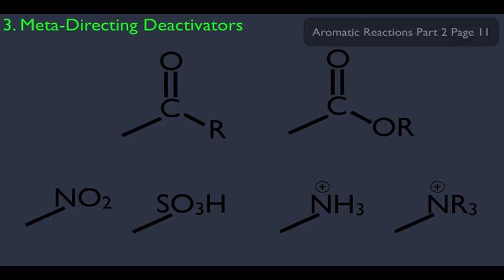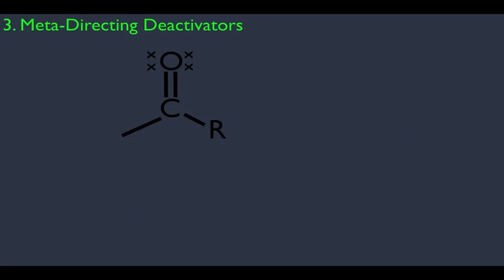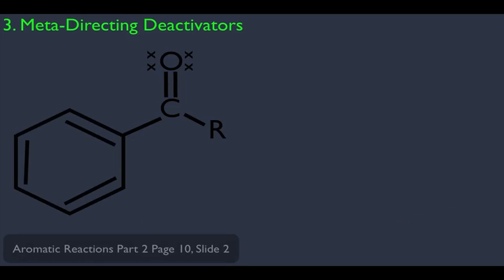Notice the first two substituents — they both have carbonyl groups. Remember, that's a C double bonded to an O. That's one thing to look for when you're trying to figure out a substituent. If it has a carbonyl group, most likely it's going to be a meta-directing deactivator. But let's dive into the analysis to see why it behaves the way it does.